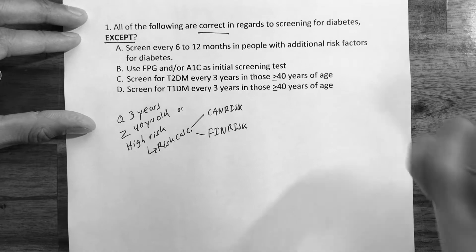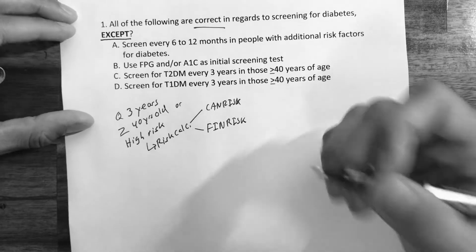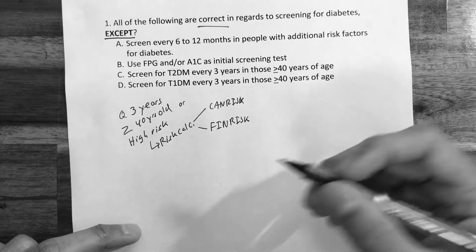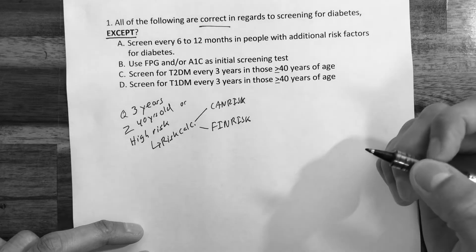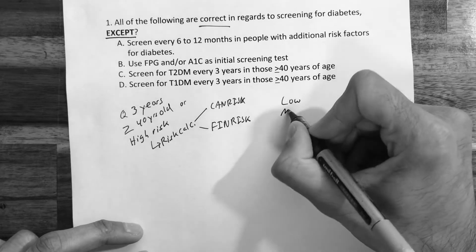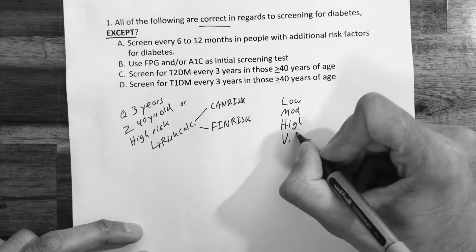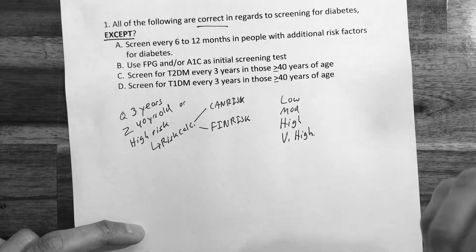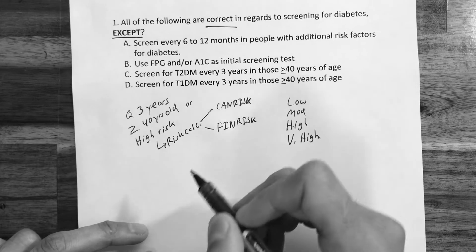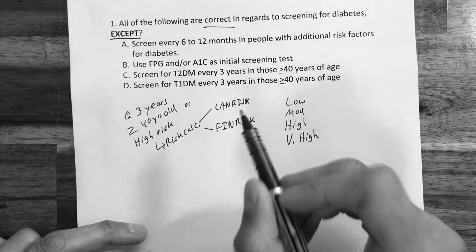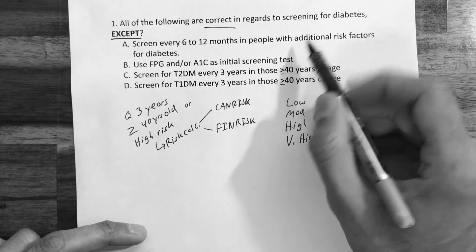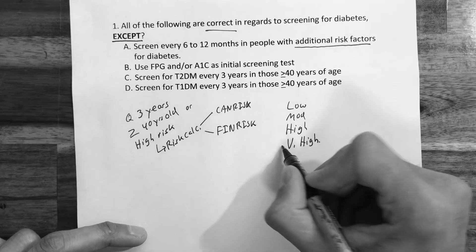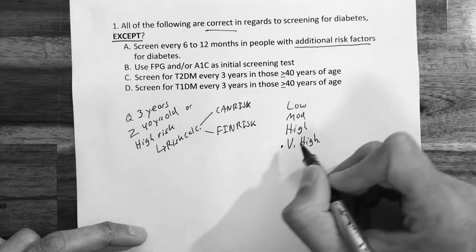The risk calculators can class a person as low, moderate, high, or very high risk. Now, do we screen earlier than every three years? Yes. Option A is correct — we do screen every six to 12 months in those with additional risk factors, and also those at very high risk using the risk calculator.